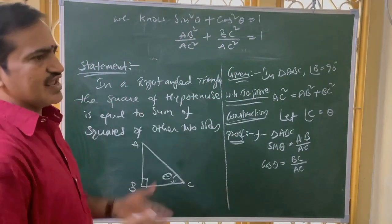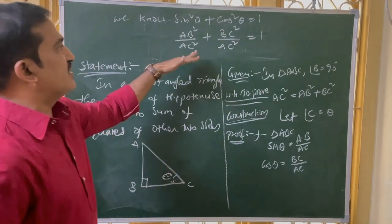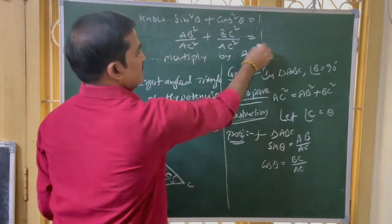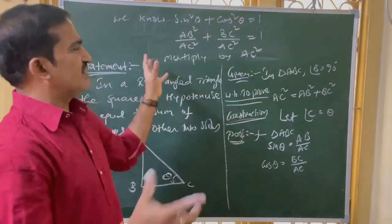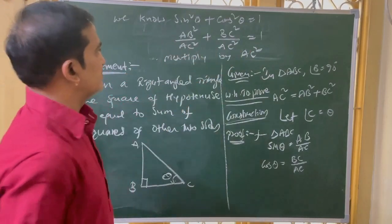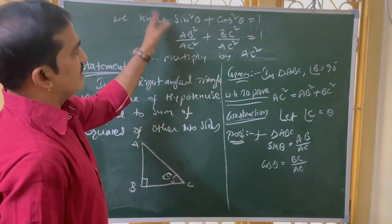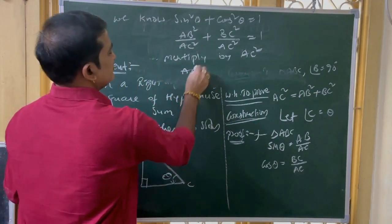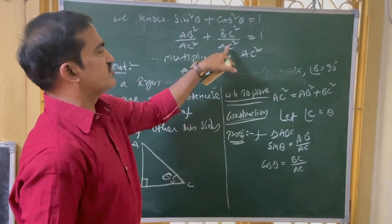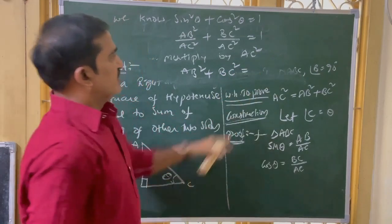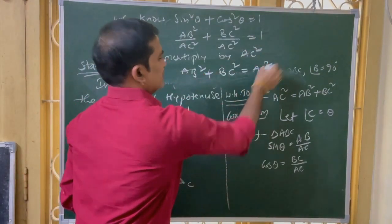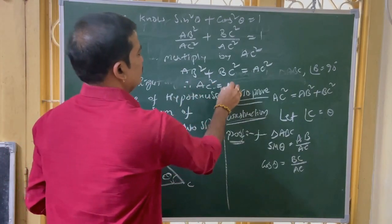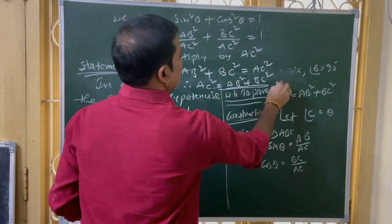Some people fear doing this Pythagoras theorem by similar triangles concept — this trigonometric method is very helpful. We know the identity: sin² theta plus cos² theta is equal to 1. Sin theta here is AB by AC, so sin² theta is AB² by AC². Plus cos² theta — cos theta is BC by AC, so cos² theta is BC² by AC². Therefore AB² by AC² plus BC² by AC² equals 1. Multiplying both sides by AC²: AB² plus BC² equals AC². Therefore, AC² equals AB² plus BC². The theorem is proved.